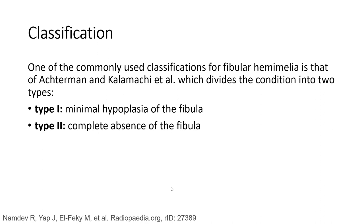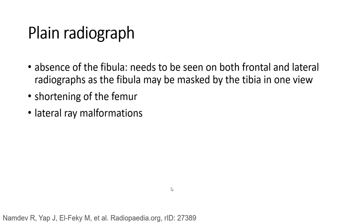One of the commonly used classifications for fibular hemimelia is that of Achtermann and Kalamchi, which divides the condition into two types. Type 1 is minimal hypoplasia of the fibula. Type 2 is complete absence of the fibula. Absence of the fibula needs to be assessed on both AP and lateral views, as the fibula may be masked by the tibia in one view. Shortening of the femur or fibula may also be noted.